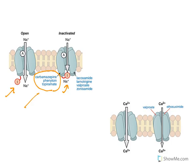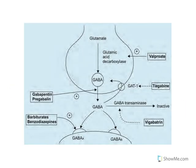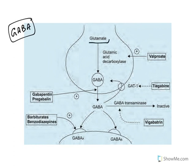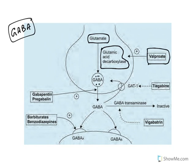This is an important point — GABA transmission is affected by many drugs. GABA, gamma-aminobutyric acid, is synthesized from glutamate with the help of the enzyme glutamic acid decarboxylase. When this enzyme activity is enhanced, GABA synthesis is increased. Valproate enhances GABA synthesis.